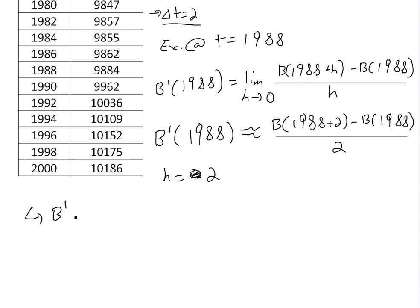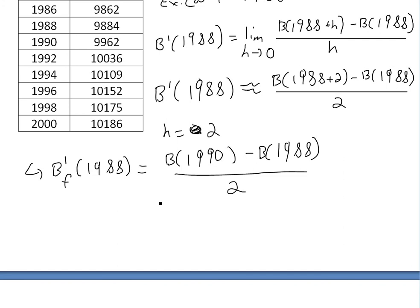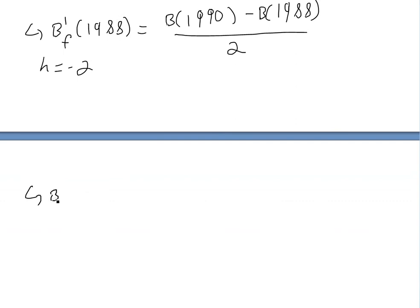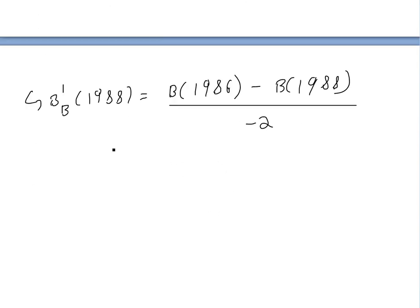We can call this B_forward of 1988: B(1990) minus B(1988) divided by 2. And if instead we let H equal negative 2 — working backwards — we get B_backward of 1988: B(1986) minus B(1988) divided by negative 2. Since the numerator is negative and the denominator is negative, you still get a positive slope.